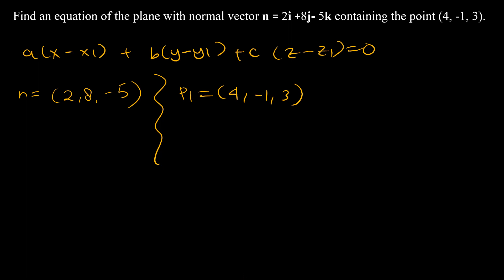So you have this as a, b, c, and this point is x1, y1, and z1. So now simply plugging into the formula, we have 2(x minus 4) plus 8 times (y minus y1), which is, minus y1 but it's negative already so we write plus 1. And then negative 5 times (z minus 3).